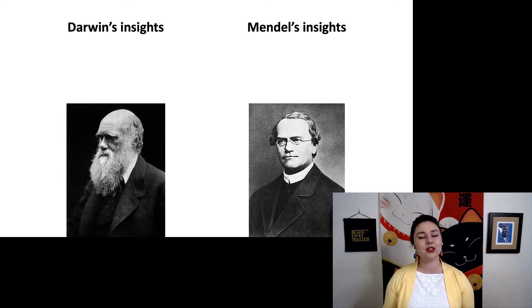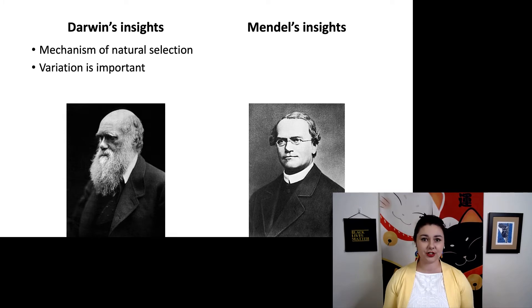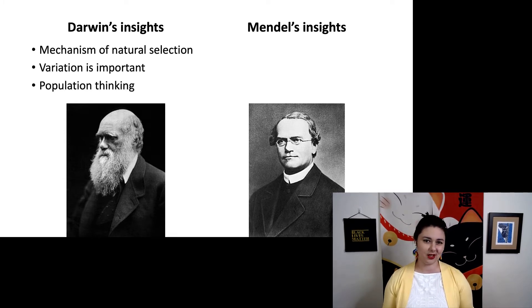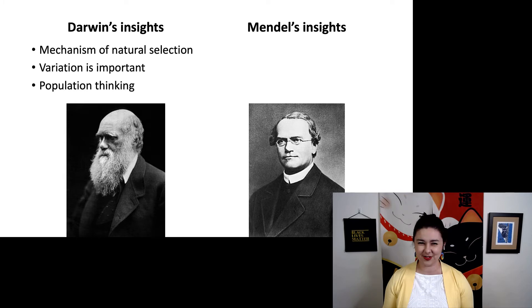Let's talk about the insights we got from each of them. From Darwin, we got the mechanism of natural selection. He also told us that variation is important, and of course this population thinking — we need to be looking at a population, not a single individual. Because remember, evolution happens to a population, not individuals.